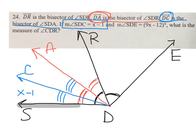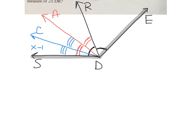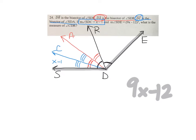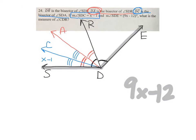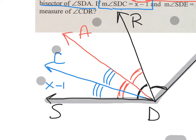SDE is 9x minus 12 degrees. So if I were to take each one of these four angles and add them up, that would have to equal 9x minus 12. So let's go ahead and do that and see where that puts us. If angle SDC is x minus one, that means this other angle is also x minus one.